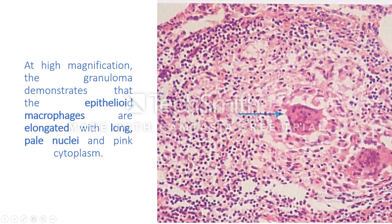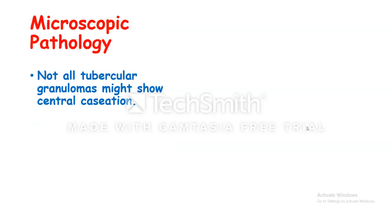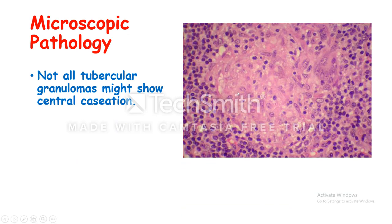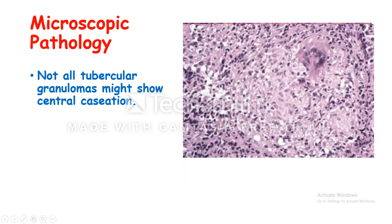Here is a giant cell — we call this a foreign body giant cell when the nuclei are arranged haphazardly. Not all tubercular granulomas show central caseation. Here is a tubercular granuloma with beautiful epithelioid cells and lymphocytes, but no caseation necrosis — this is a non-caseating granuloma. There are also other tubercular granulomas which show epithelioid cells, giant cells, lymphocytes, and fibroblasts, but no central caseation necrosis.